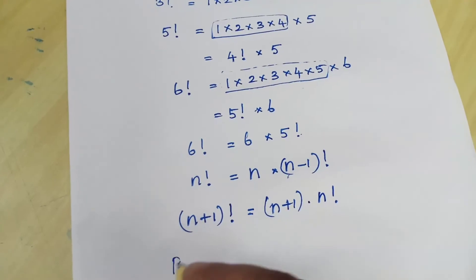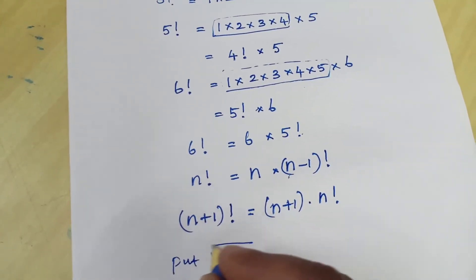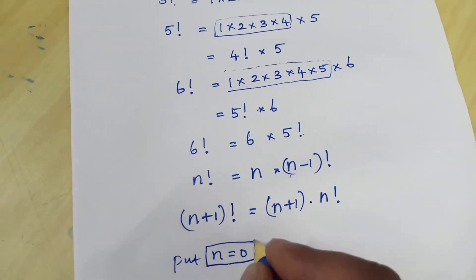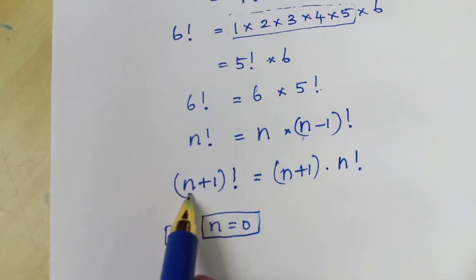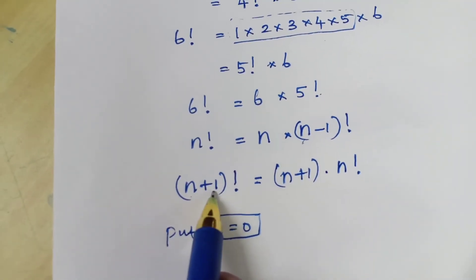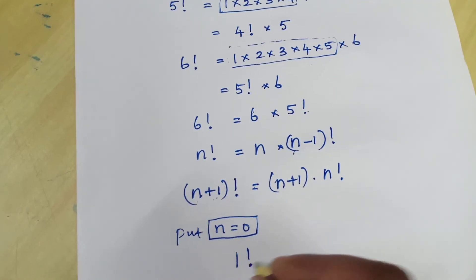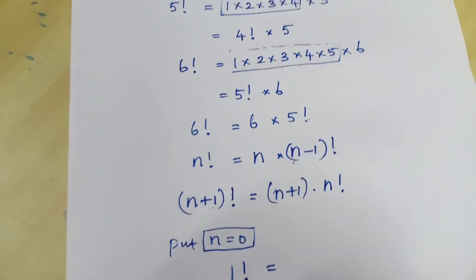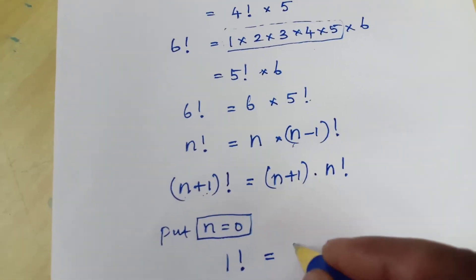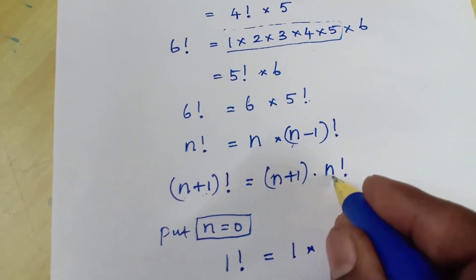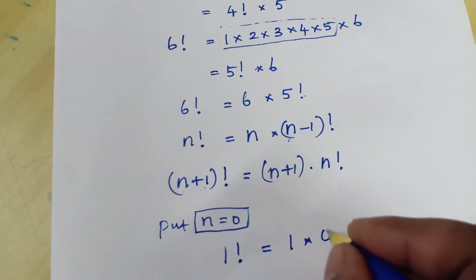Now I am going to put n equal to 0 here. When you substitute n equal to 0, what do you get? 0+1 is 1, so 1 factorial is equal to (0+1), that is 1, times n factorial — that is 0 factorial. So 0 factorial.